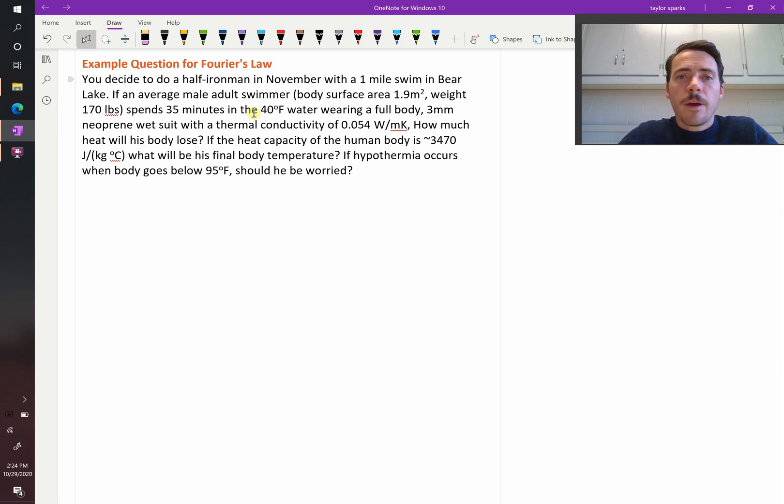If the heat capacity of the human body is given as 3,470 joules per kilogram Celsius, what will be their final body temperature at the end of the swim? And then last question is, if hypothermia occurs when your body goes below 95 degrees, should this person be worried that they're going to get hypothermia under these conditions?